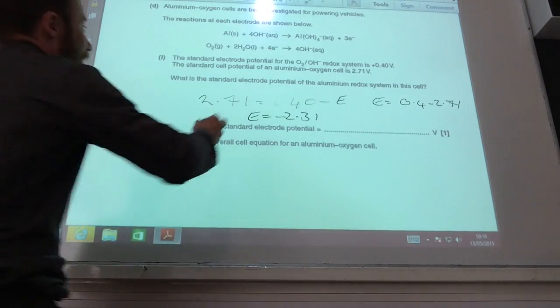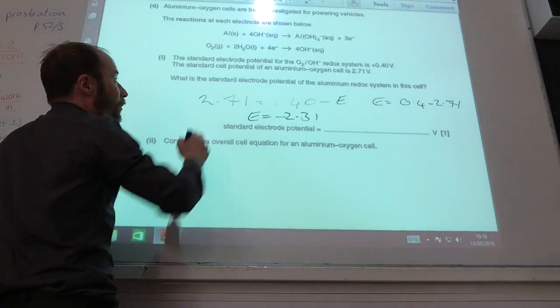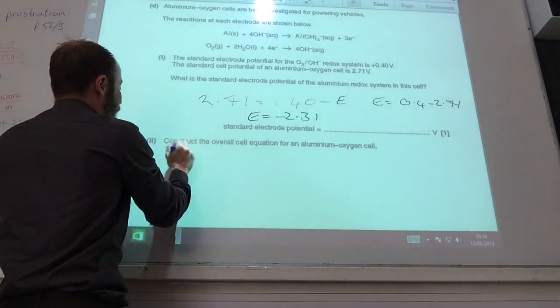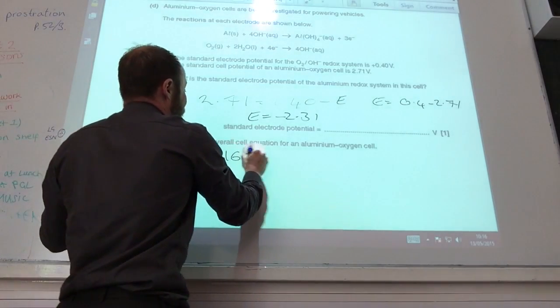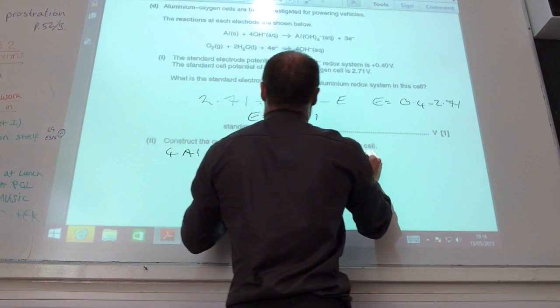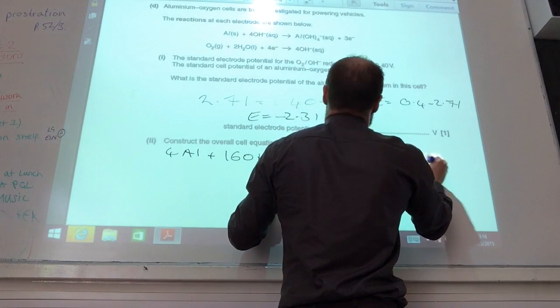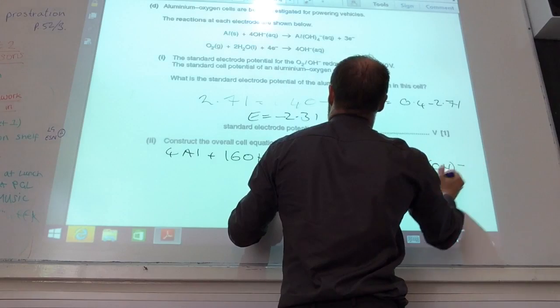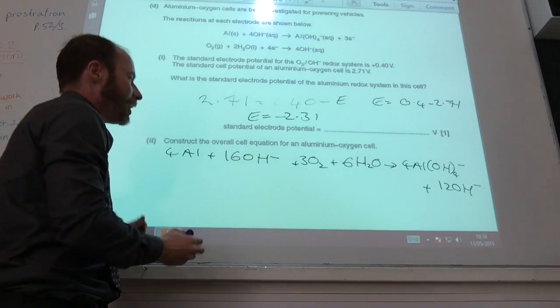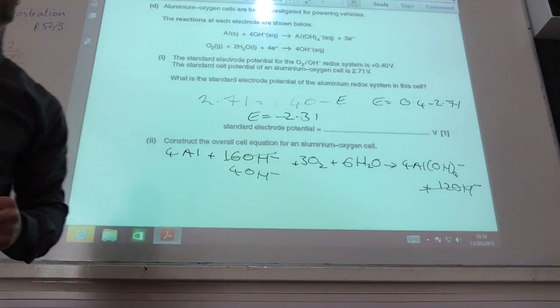To construct an overall equation, this equation you need to times by 4, and this equation you need to times by 3. Notice the electrons on the left-hand side and right-hand side. It's going to be 4Al plus 16OH- plus 3O2 plus 6H2O goes to give me 4Al plus 12OH-. The key thing to notice is that you can remove that and that gives you 4OH- there. So cancel that.